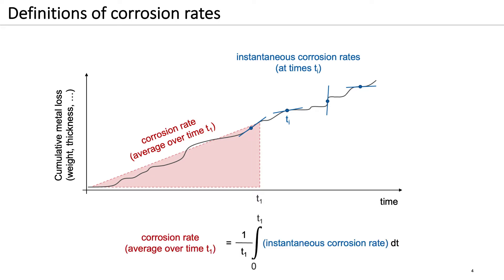The relationship between the average and the instantaneous corrosion rate is given at the lower end of the slide.